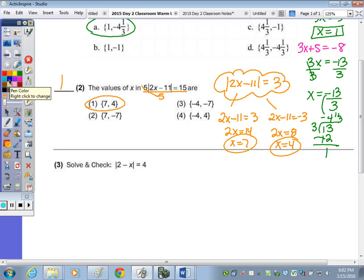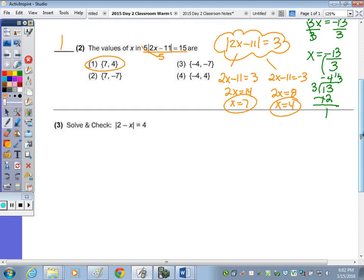In number 3, our absolute value expression is isolated, so I can make my two lines to solve both equations. One equal to 4 and the other 2 minus x equal to negative 4. Subtract the 2, I get negative x equals 2. Divide by negative 1, and x equals negative 2. Subtract the 2 here, and I have negative x equal to negative 6. So when I divide by negative 1, we get 6.